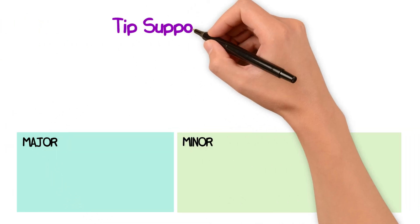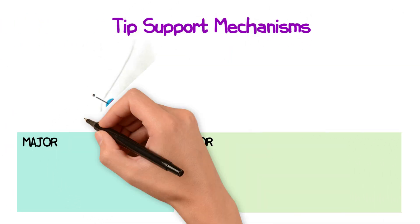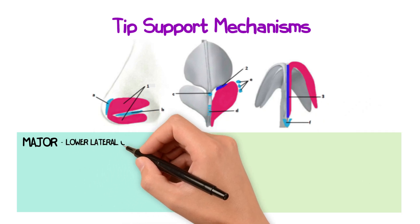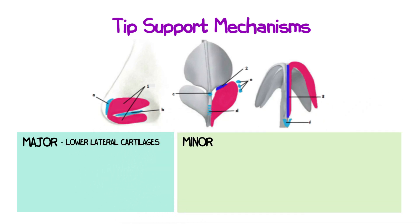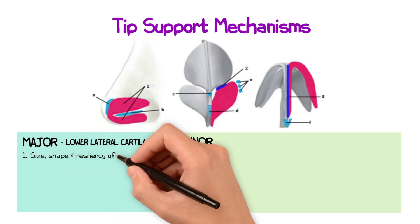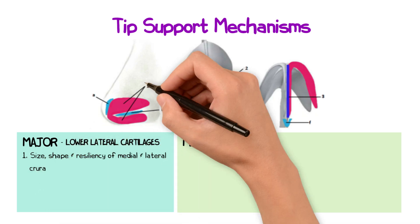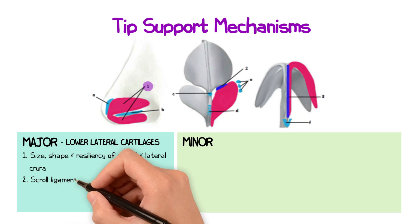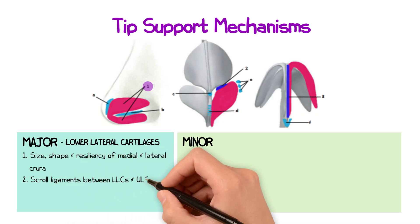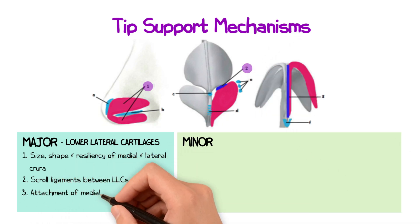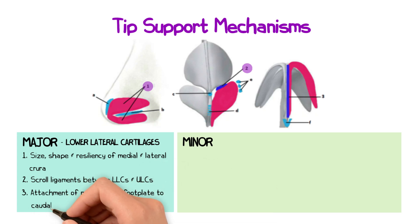What are the major and minor tip support mechanisms? The major tip support mechanisms involve the lower lateral cartilages. They consist of: one, the size, shape, and resilience of the medial and lateral crura; two, the scroll ligaments between the lower and upper lateral cartilages; and three, the attachment of the medial crural footplate to the caudal septum.